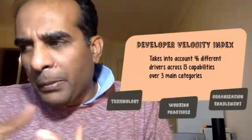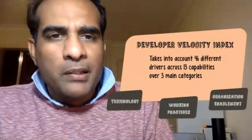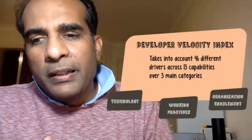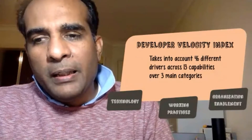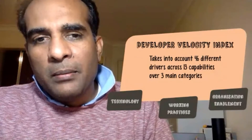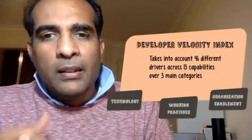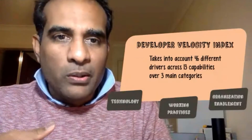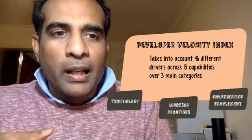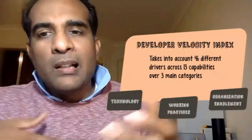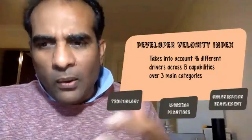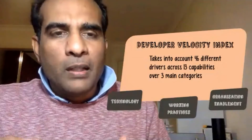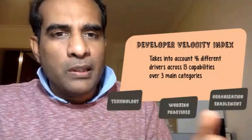When McKinsey released this paper — I think it was around March or April this year — Microsoft released a tool at their Build conference. It's an online tool you can access at developer velocity assessment dot com. It asks you a series of questions, and by answering them it gives you a number — that is your Developer Velocity Index.